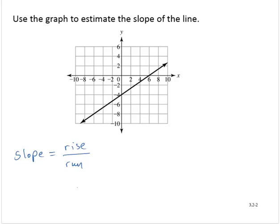I'm going to try and find a couple of nice points on the line, points that go through the grid marks. So I have this point right here, that looks nice, and this point right here.